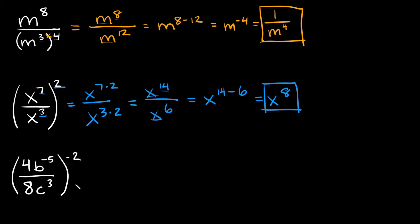Now let's do the last example. First, we simplify the top and the bottom by applying the outer exponent. We also have coefficients in this problem — a 4 on top and an 8 on the bottom. This negative 2 out here has to be applied to every single term inside the parentheses: to the 4, to b to the negative 5, to the 8, and to c cubed.